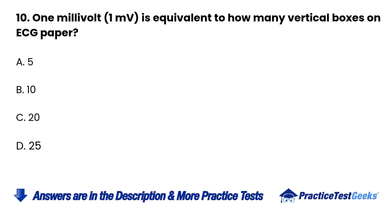10. 1 millivolt (1 mV) is equivalent to how many vertical boxes on ECG paper? A. 5. B. 10. C. 20. D. 25.